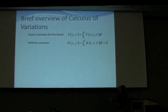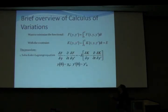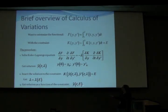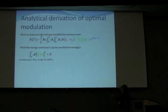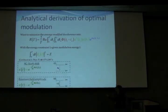Up until now, this formalism just suggests which modulation to use. Now we go one step beyond and find the optimal modulation. For a brief mathematical interlude: to minimize a functional with some constraint using calculus of variations, you solve the Euler-Lagrange equation with a Lagrange multiplier and boundary conditions, insert the solution into the constraint to find the Lagrange multiplier, then reinsert to get the solution as a function of the constraint.